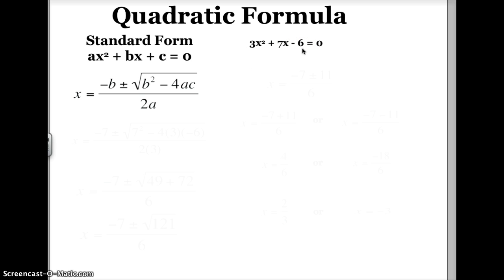The first step is to substitute the A, B, and C into the quadratic formula. When I do that, I'm going to replace negative B with -7, because I'm taking the opposite of B.